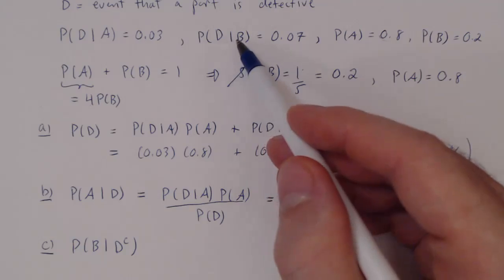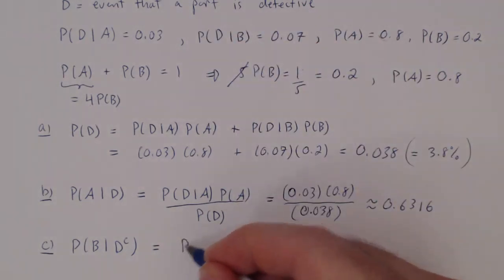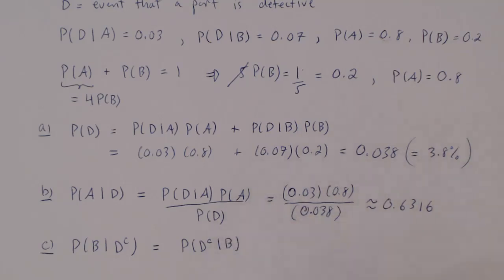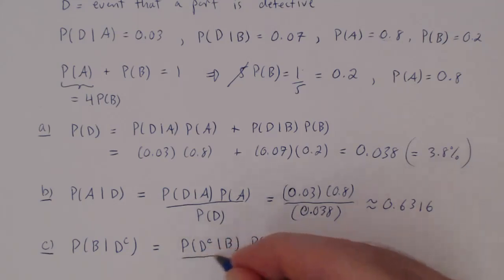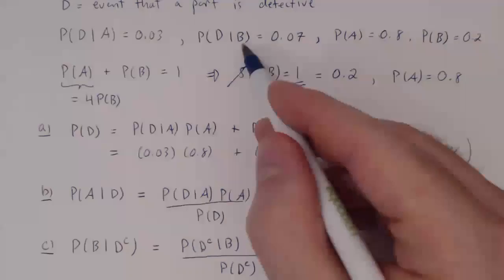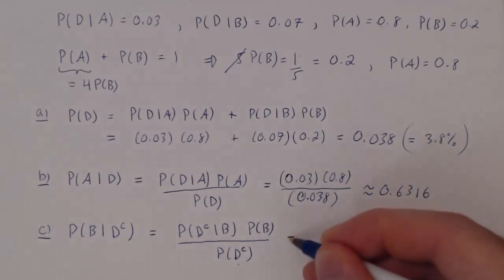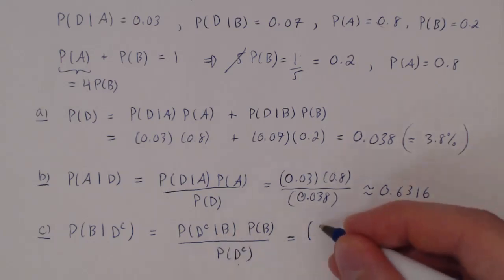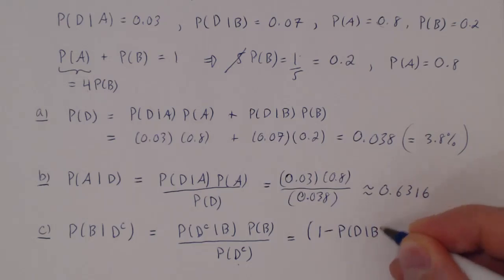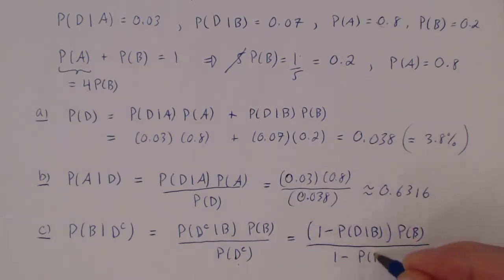We know P(D|B) but the events are inverted, so we use Bayes' theorem: P(B|D complement) = P(D complement|B) · P(B) / P(D complement). We then apply the complement rule twice: P(D complement|B) = 1 − P(D|B), and P(D complement) = 1 − P(D). So we use Bayes' theorem and twice the complement rule.